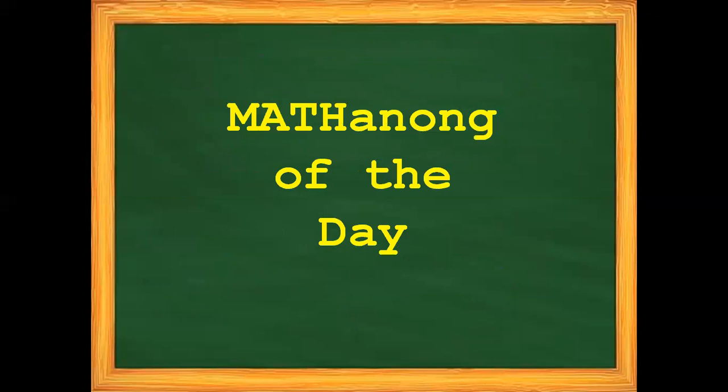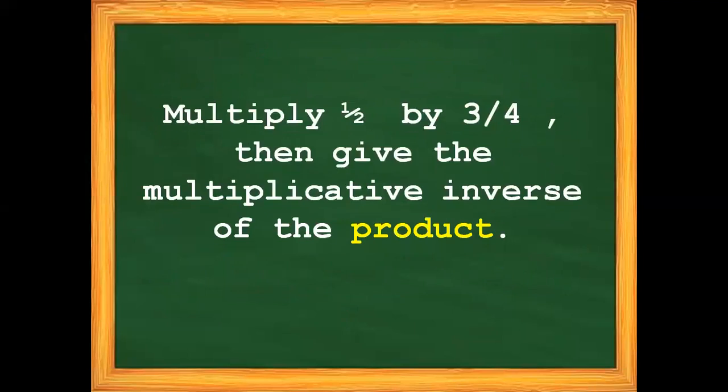For our math challenge of the day: multiply 1 half by 3 fourths, then give the multiplicative inverse of the product. Take note — you are going to give the reciprocal or the multiplicative inverse of the product of 1 half and 3 fourths. Again: multiply 1 half by 3 fourths, then give the multiplicative inverse of the product.